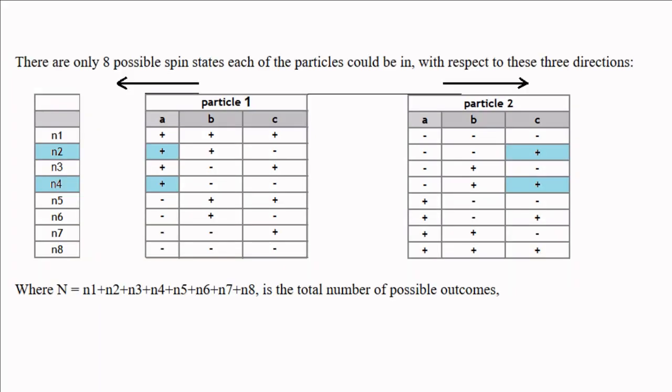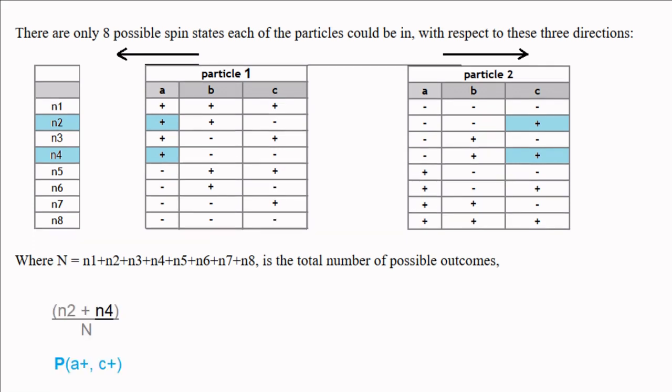The number of times that spin 1 is plus along direction a, and spin 2 is plus along direction c, equals n2 plus n4. Therefore the probability of s1 being plus along a and minus along c is equal to n2 plus n4 over n.